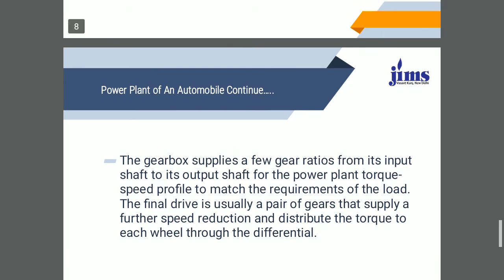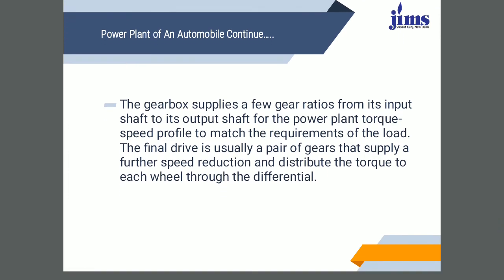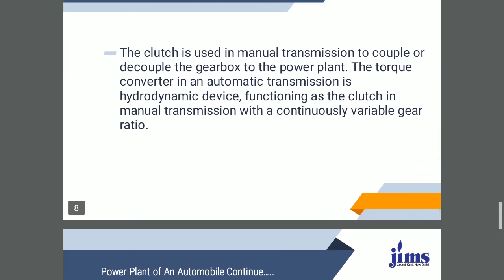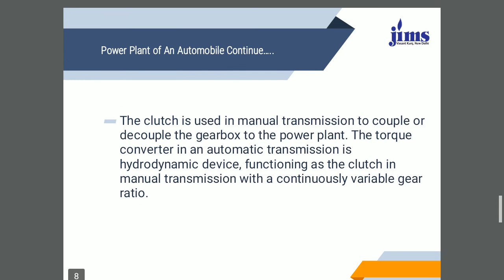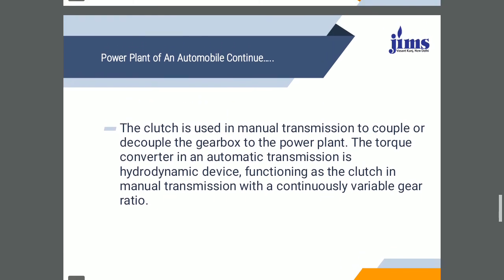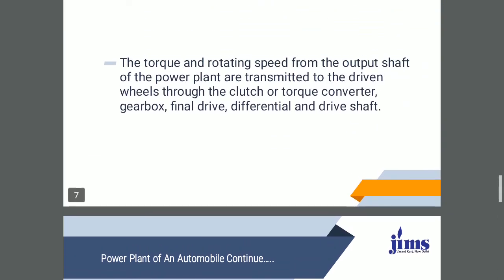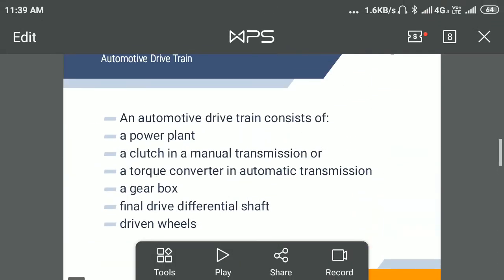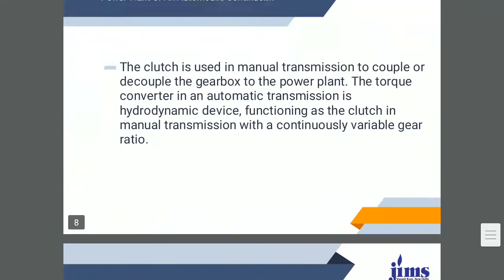These are basically the introductions about the power plant, what are the things we are going to use in the automobile, what are the transmission systems, which parts of an automobile, what type of material is used to construct a clutch and what is the function of the clutch, how it is associated with the gearbox, and how the torque is converted — these are the automotive drive systems. This is the first lecture, thank you. We are continuing in the second lecture.